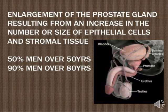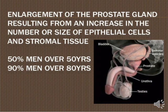The definition of BPH: enlargement of the prostate gland resulting from an increase in the number and size of epithelial cells and stromal tissue. The number and size of epithelial cells as well as the stromal tissue also enlarge during the BPH period. This affects 50% of men over 50 years and 90% of men over 80 years.